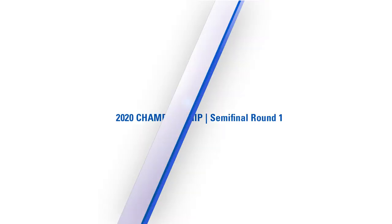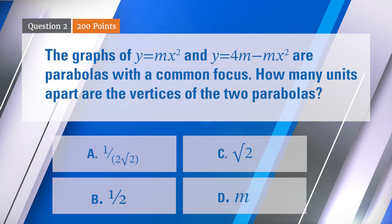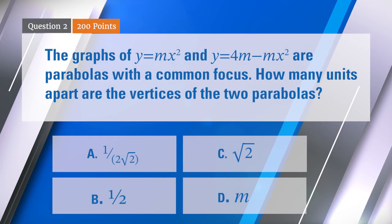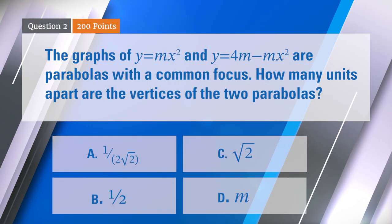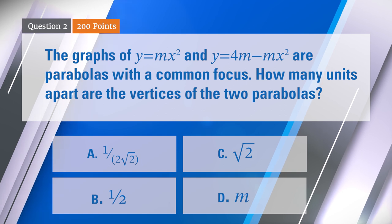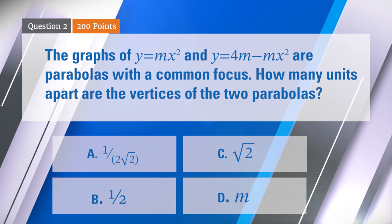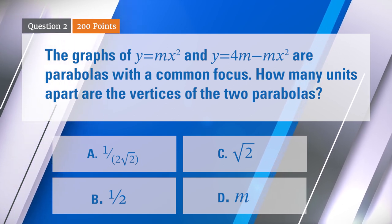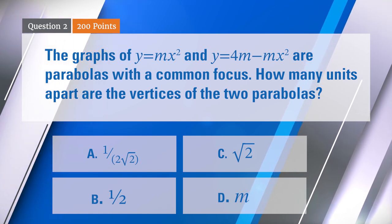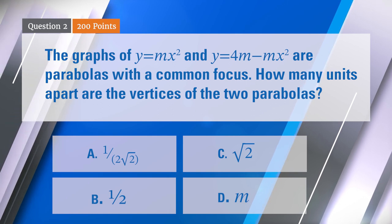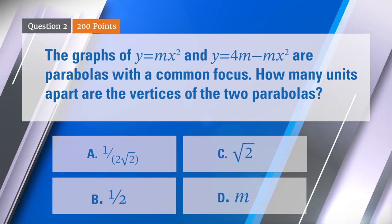The graphs of y equals mx squared and y equals 4m minus mx squared — in this case, just the x is squared, not the m — those are parabolas with a common focus. How many units apart are the vertices of the two parabolas?